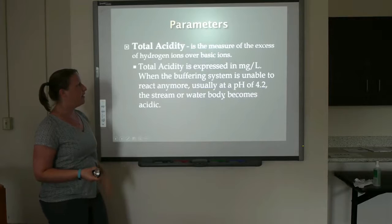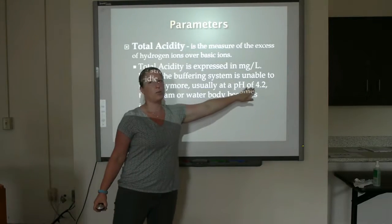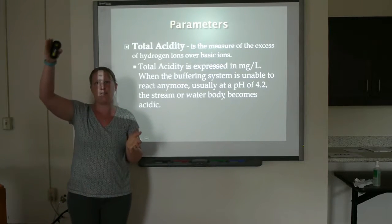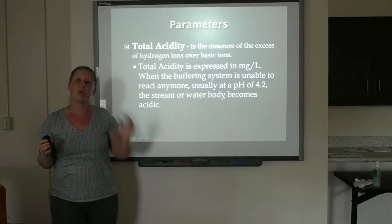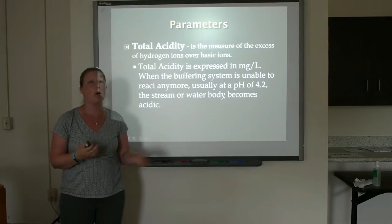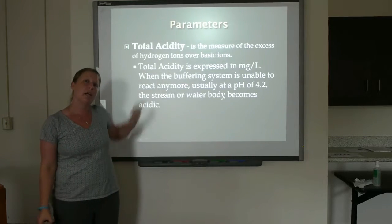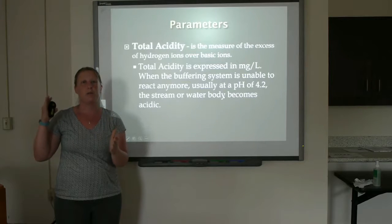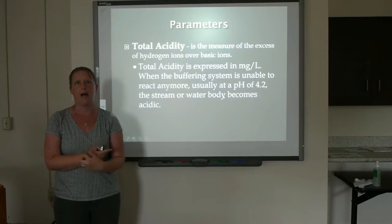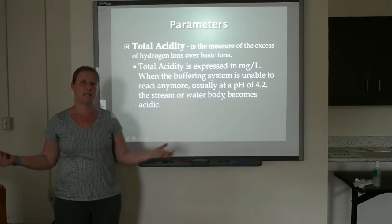Looking at the slide, it mentions a pH of 4.2 — and we titrate for acidity up to a pH of 8.3. Between a pH of 4.2 and 8.3, we can have both acidity and alkalinity. Below a pH of 4.2, we only have acidity, and above a pH of 8.3, we only have alkalinity. So when we look at solutions with a pH between 4.2 and 8.3, we may have both, and so often we'll do both titrations to look at how much alkalinity and how much acidity we have, assuming that the system's not in equilibrium.